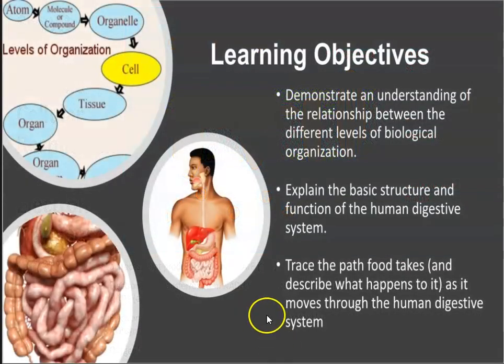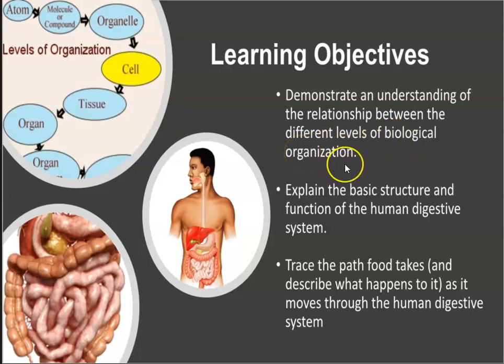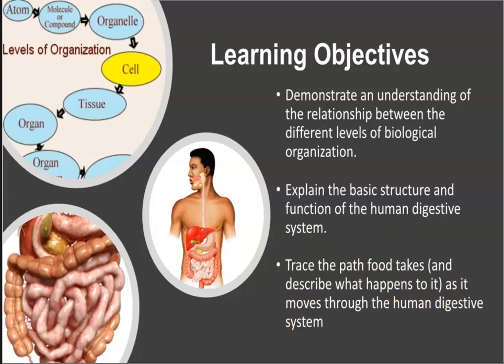Here are our learning objectives for this chapter. We want to demonstrate an understanding of the relationship between the different levels of biological organization — a review of things covered in Chapter 1. We also want to explain the basic structure and function of the human digestive system, so we can trace the path that food will take and describe what happens to it as it moves through the digestive system.